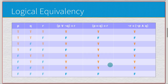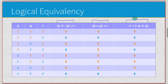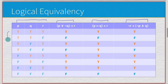Here we have a more complex truth table with three unique expressions. Each one has the same three variables: p, q, and r. So we have two to the three, which is eight possibilities, all listed here.